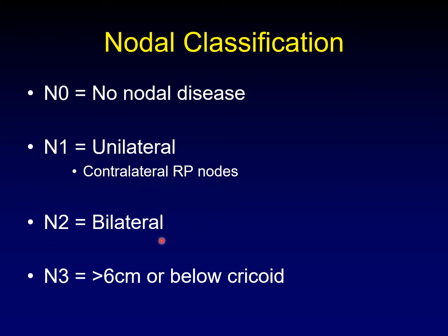N2 is bilateral disease. N3 disease is when you have a nodal cluster that's greater than six centimeters, just like the rest of head and neck squamous cell carcinoma. Or if nodal disease extends below the cricoid — it's very unusual for nasopharyngeal carcinoma to extend into the lower neck. So if you have a lymph node below the lower edge of the cricoid cartilage, that gets you to N3 in nasopharyngeal carcinoma.